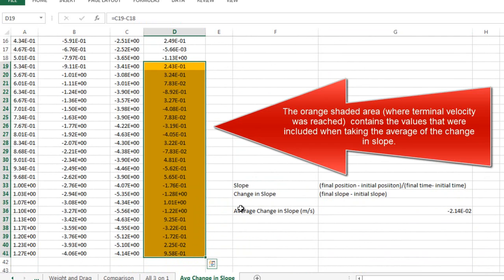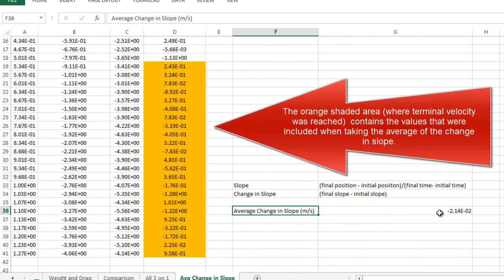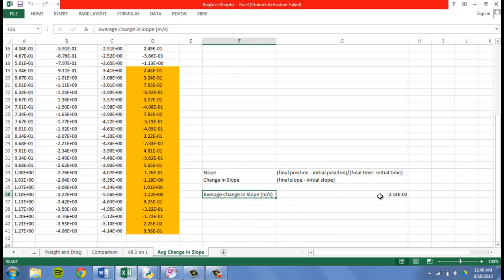Then I took a few of the values from the change in slope and averaged them because I thought they consisted and made up of the terminal velocity or where the terminal velocity was. The average change in slope was found to be 0.002 meters per second, or negative in this case because it was going downward.